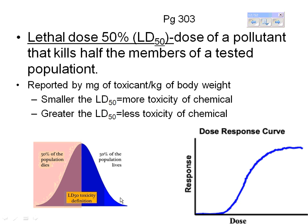The threshold is the maximum amount of a substance without measurable effects — right before the blue line comes off the x-axis. ED50 is effective dose 50%, meaning the amount of a substance — usually not a toxin — that shows the desired effect on 50% of the population.